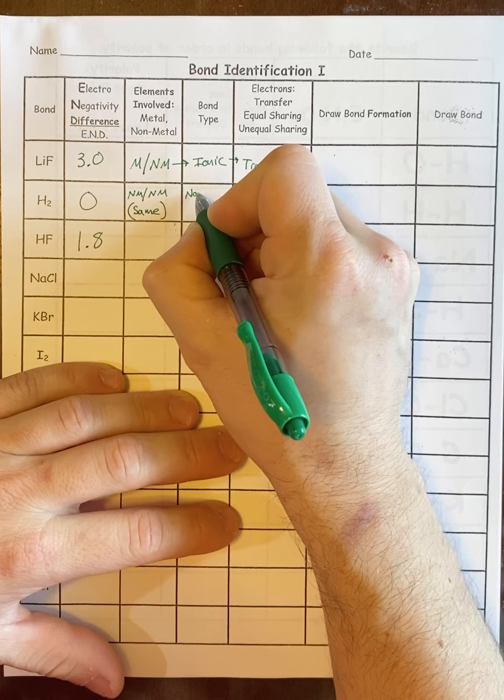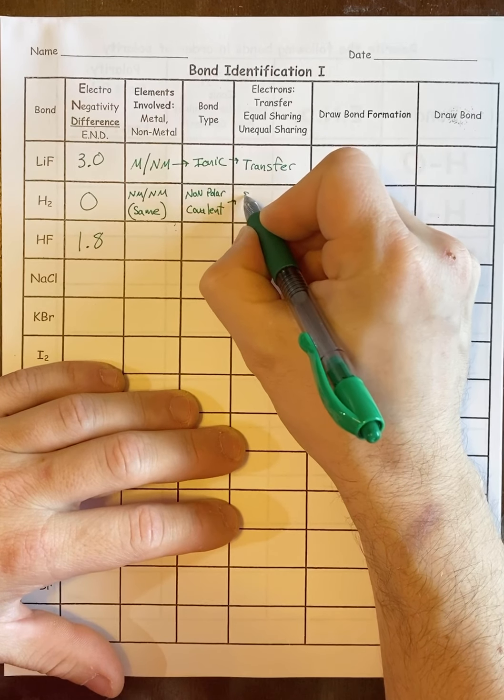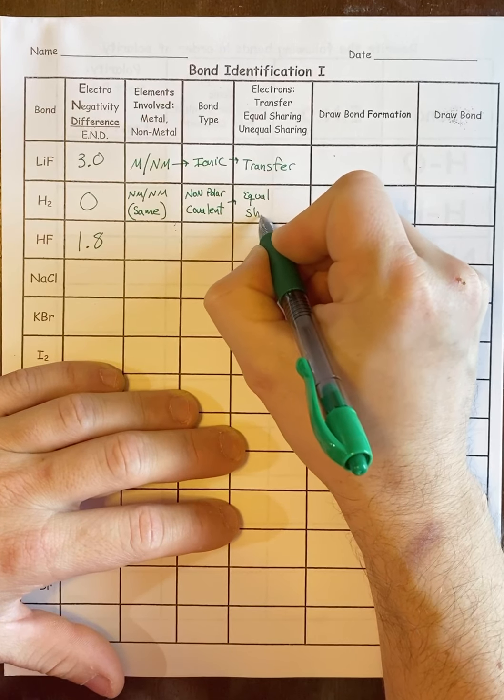Next two. For H2, we have a nonmetal with another nonmetal—nonmetal, and they're the same element, which means the bond type is nonpolar covalent.